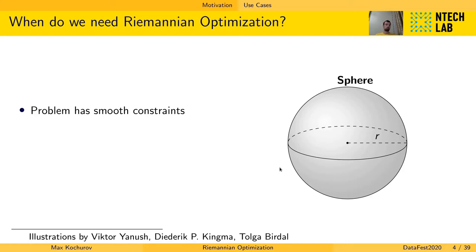When do we need Riemannian optimization? The first thing you might think is the constraint problem. And what type of constraint is actually useful to consider when we choose between projective optimization or Riemannian optimization. For Riemannian optimization your constraint should have some structure. And in this case the structure is the smoothness of the constraint.